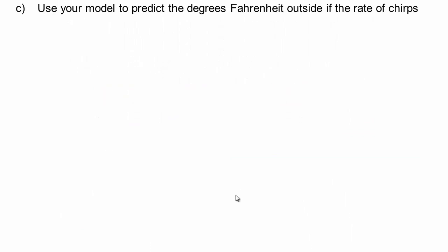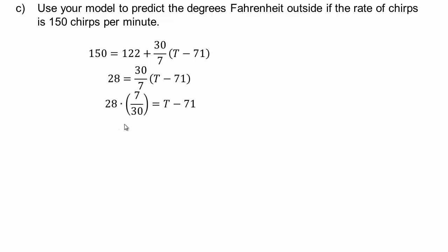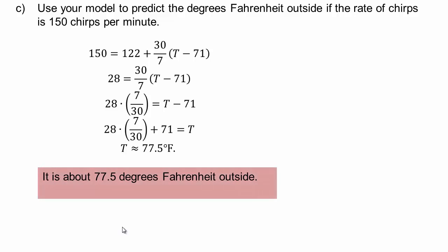We are now asking you use your model to predict the temperature outside if you could hear the rate of chirps per minute. So let's say you could hear 150 chirps per minute. What do you think is the temperature outside? All right, so we have 150 chirps per minute. And this is the equation and then you can solve for T. So subtract 122, we have 28 equals 30 over 7 times T minus 71. Multiply both sides by 7 over 30 and then add 71 and you'll end up with about 77.5 degrees Fahrenheit. That's the temperature outside. So it's about 77.5 degrees Fahrenheit outside if you could hear 150 chirps based on your model.